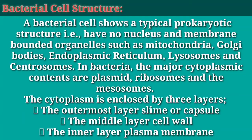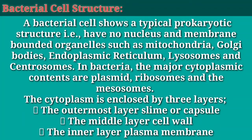Bacterial cell structure. A bacterial cell shows a typical prokaryotic structure, i.e., have no nucleus and membrane-bounded organelles such as mitochondria, golgi bodies, endoplasmic reticulum, lysosomes and centrosomes. In bacteria, the major cytoplasmic contents are plasmid, ribosomes and the mesosomes. The cytoplasm is enclosed by three layers: the outermost layer slime or capsule, the middle layer cell wall, and the inner layer plasma membrane.